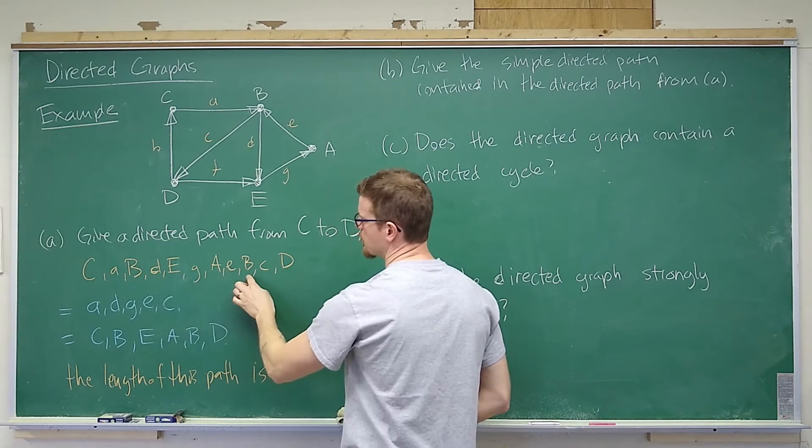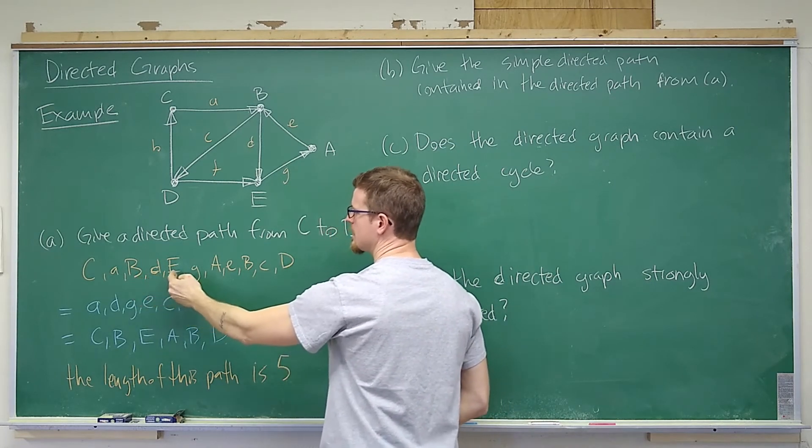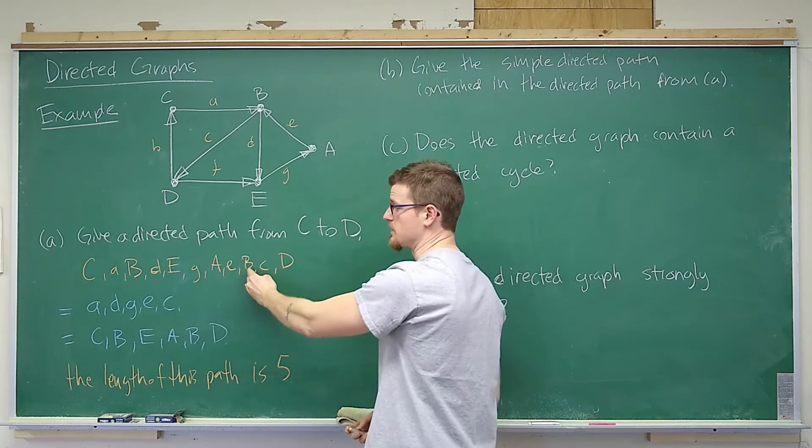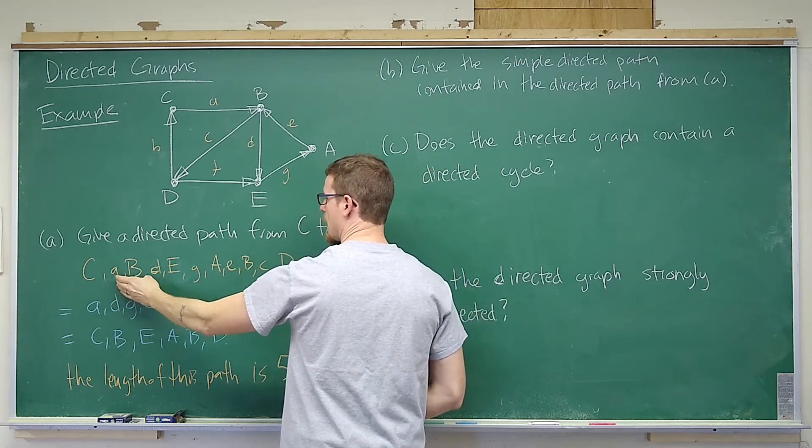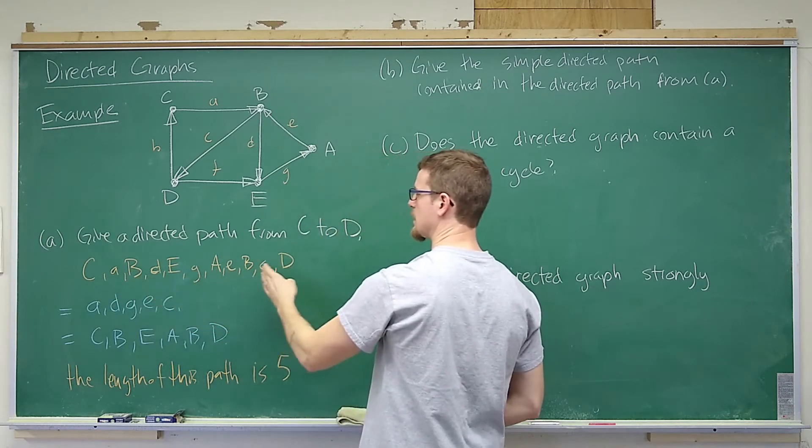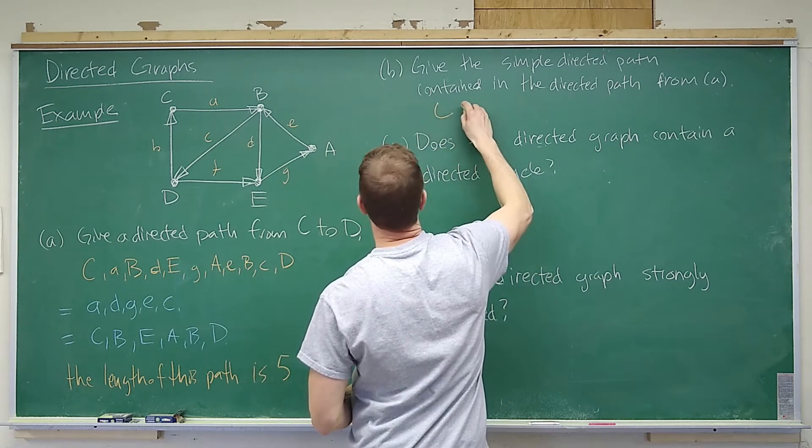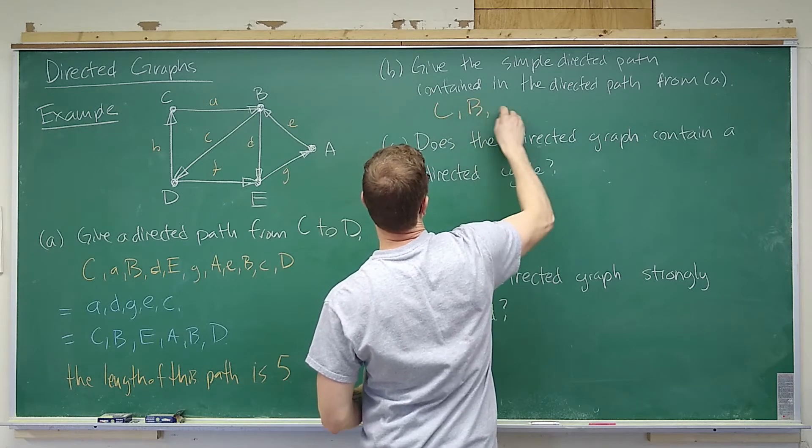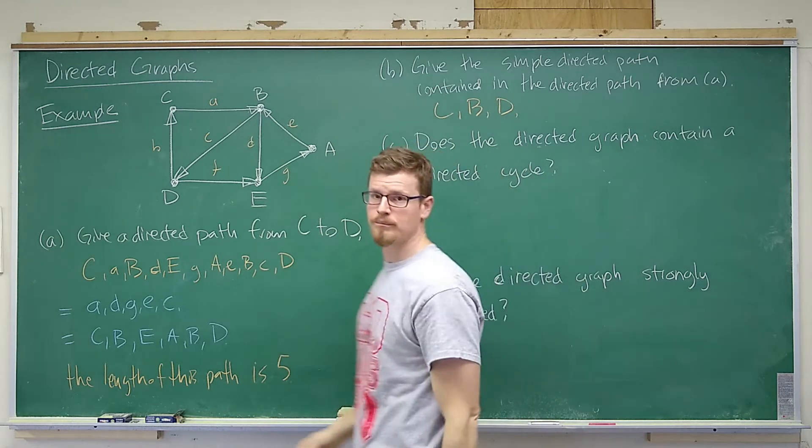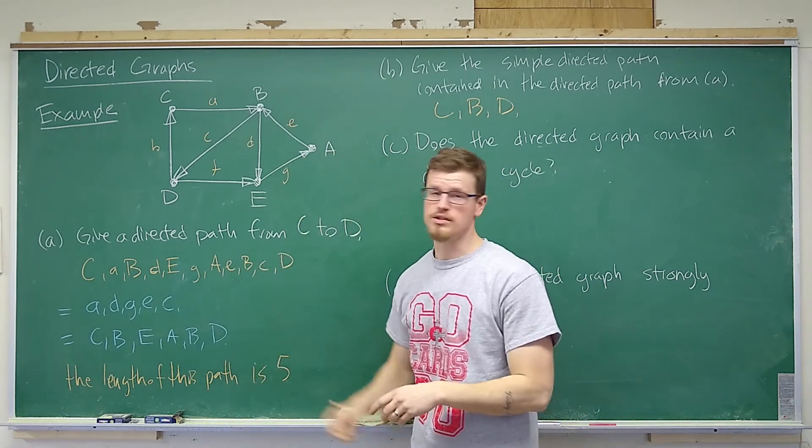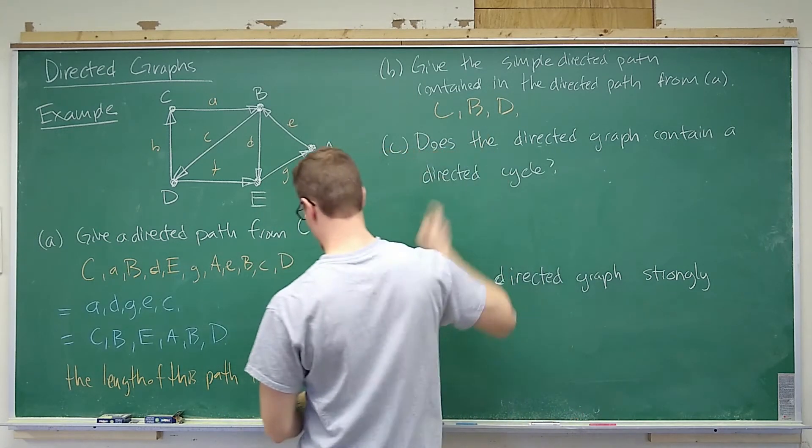So we want to consider the simple directed path here. And we visit B twice. So what we're doing is we're removing D, E, G, A, E and the second visit to B. So C, A, B, C, D, or simply C, B, D. There are a lot of different ways that we can represent this. Again, my preference is to use the vertices. So that's my answer there.